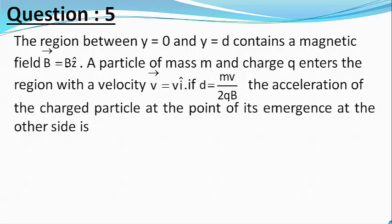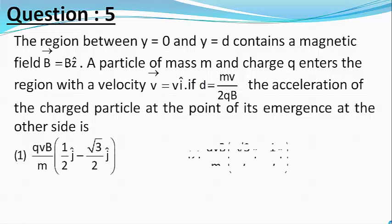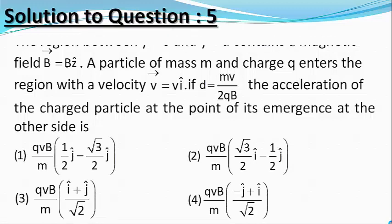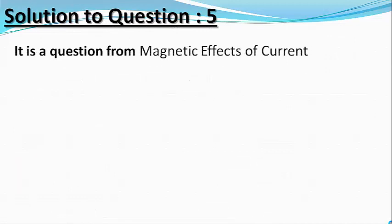If d equals mv divided by 2qb, the acceleration of the charged particle at the point of its emergence at the other side is. Four choices are given which I am not reading at present. Friends, this is an interesting problem from magnetic effects of current and only one choice is correct.